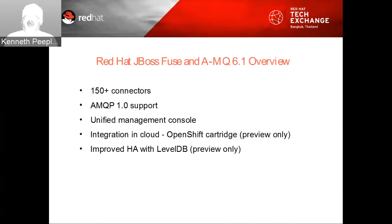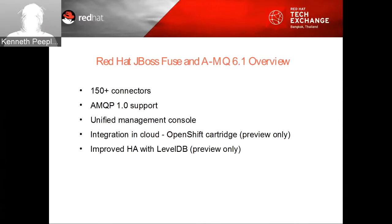A quick note on Fuse and AMQ 6.1: it has 150-plus connectors, AMQP 1.0 support, the unified management console, integration in the cloud. Keep in mind this is an OpenShift cartridge that is preview only. Improved HA with LevelDB is also preview only.